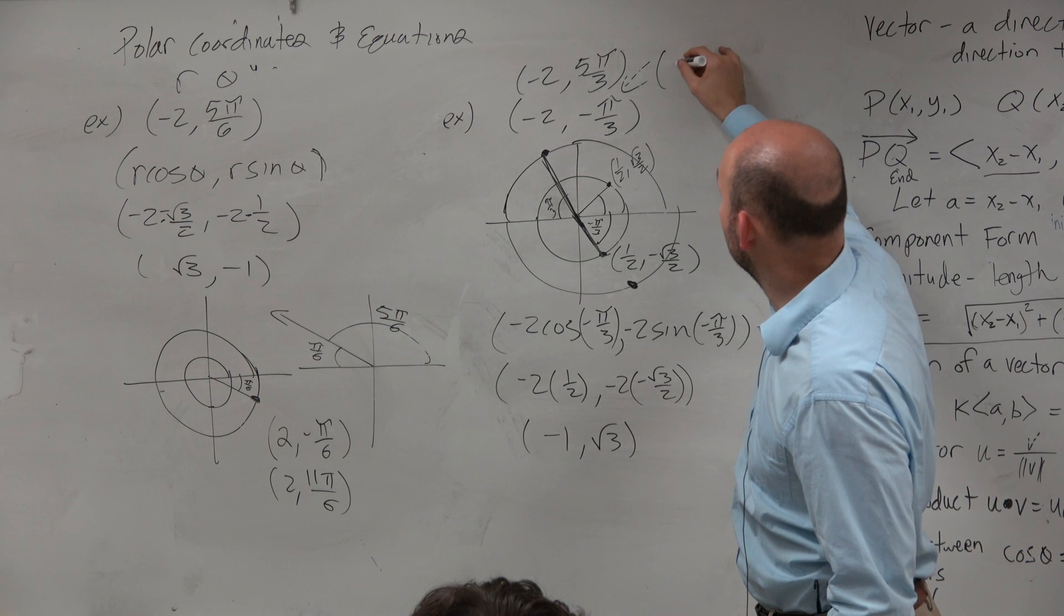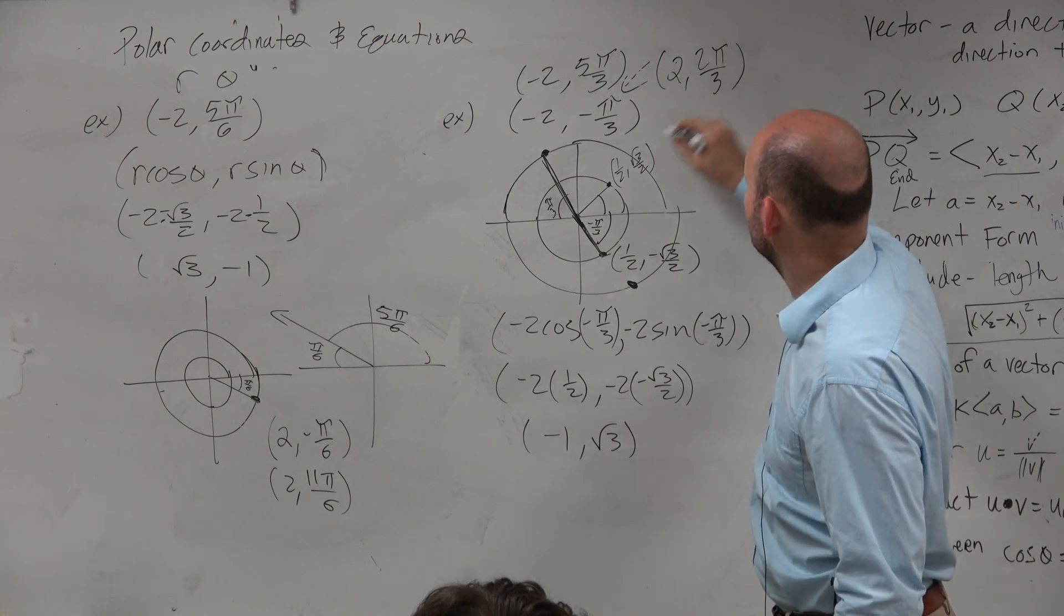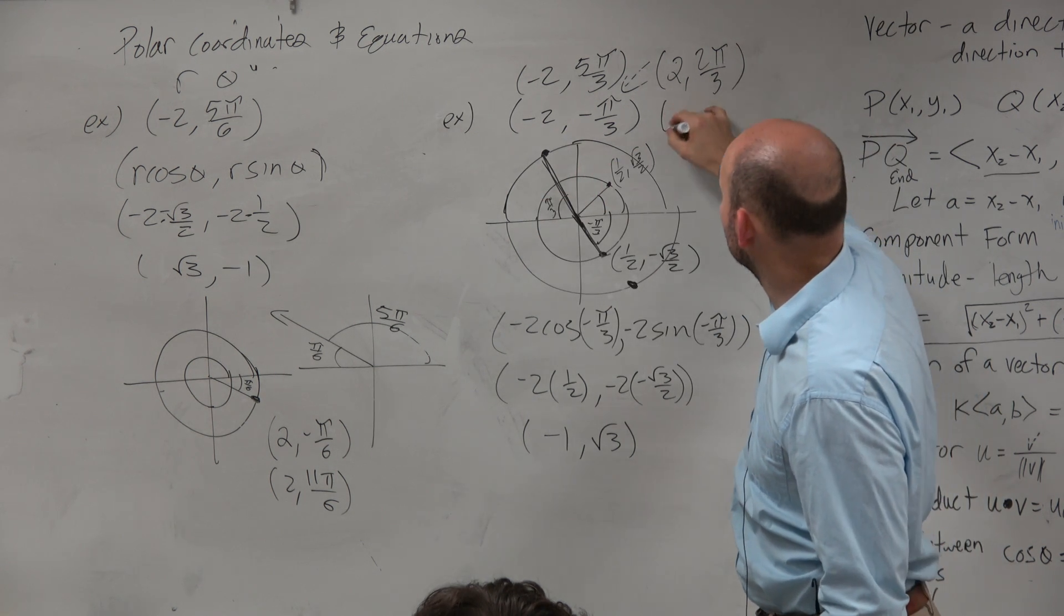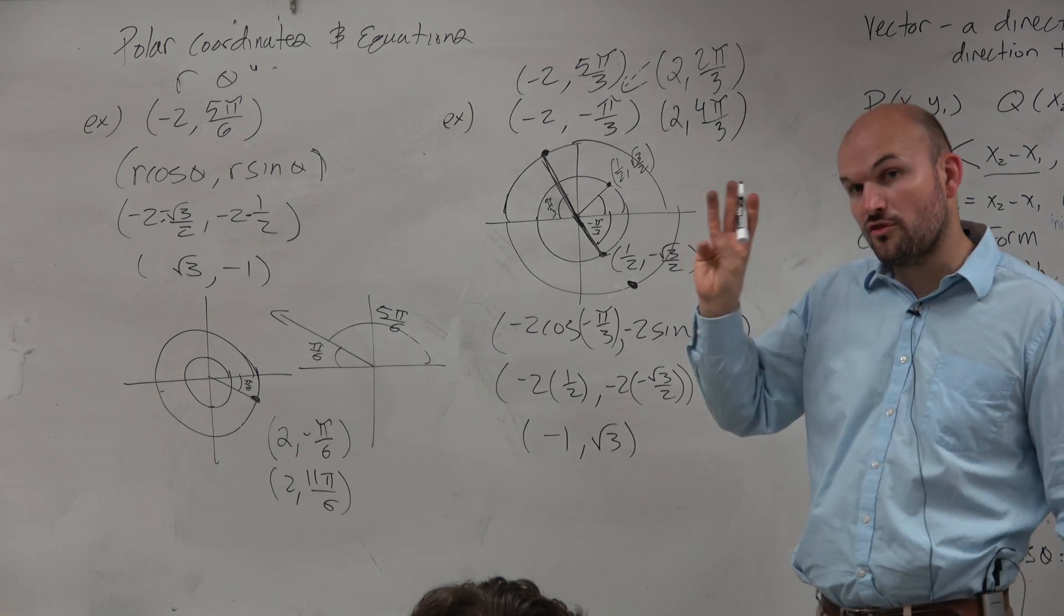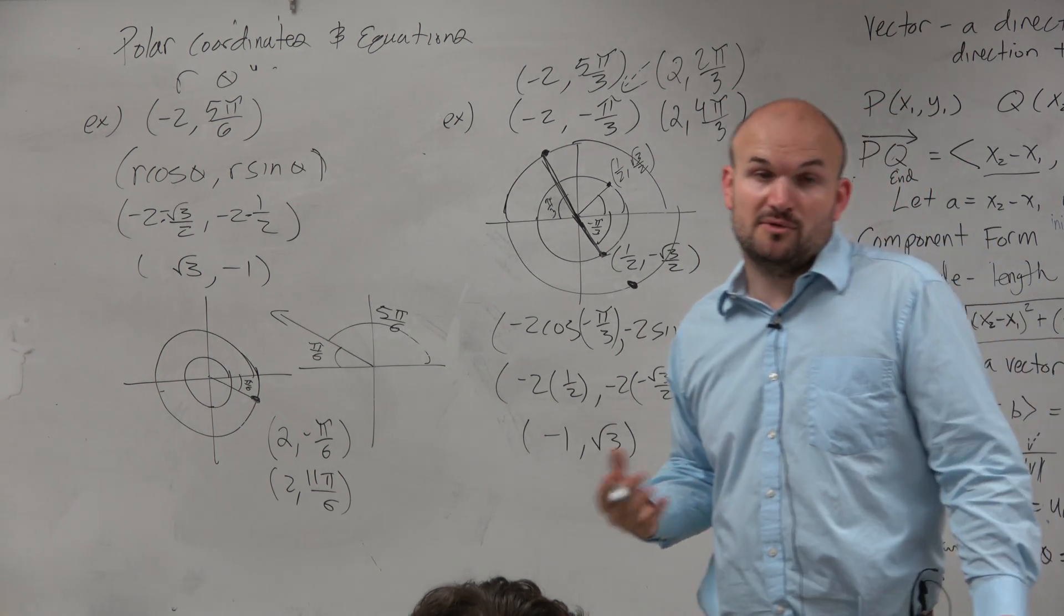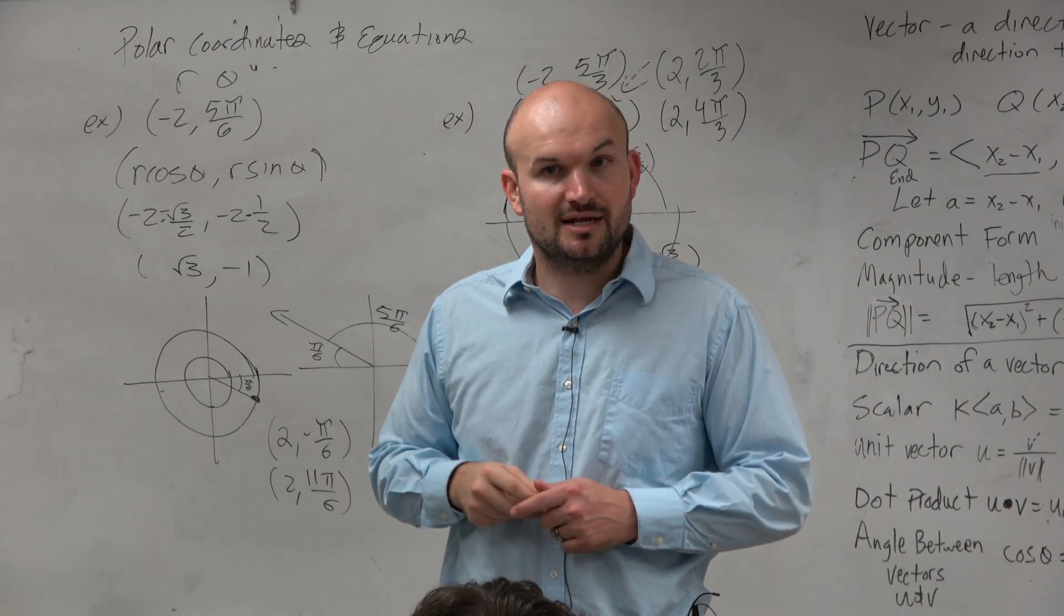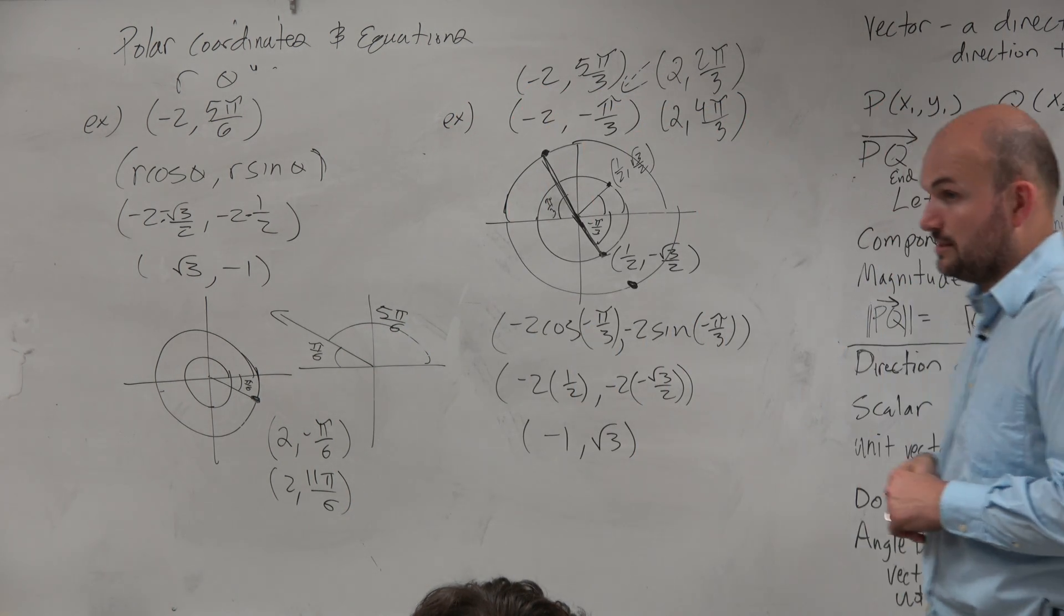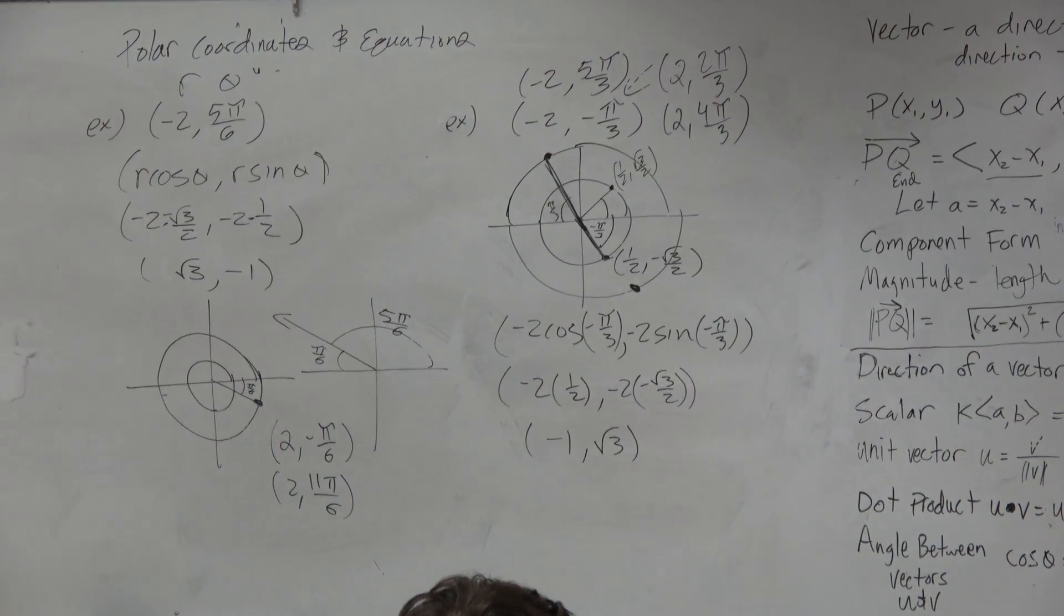So we could say 2, 2 pi over 3, or we could go in this direction, which would be 4 pi over 3. And that's just 3 extra points. On a multiple choice question, I might give you 4 of them and say, which one does not belong, right? And you have to figure out which one then is not correct. Hint, hint, wink, wink. All right, as I mentioned,